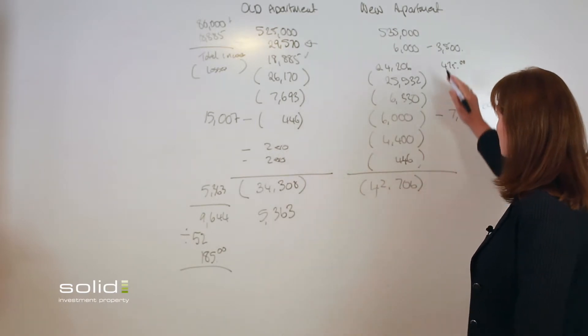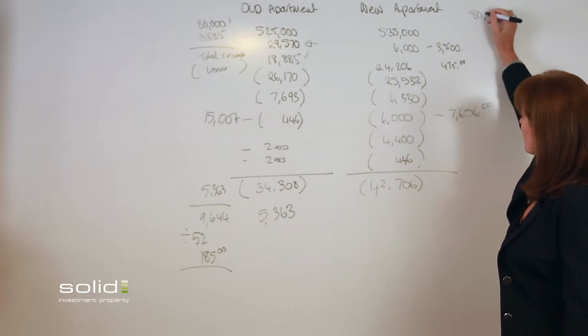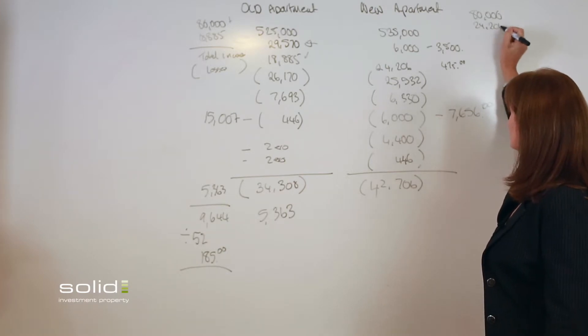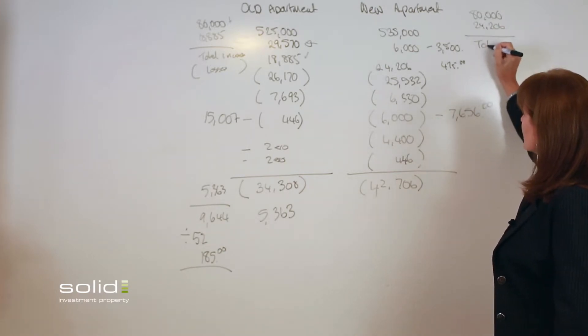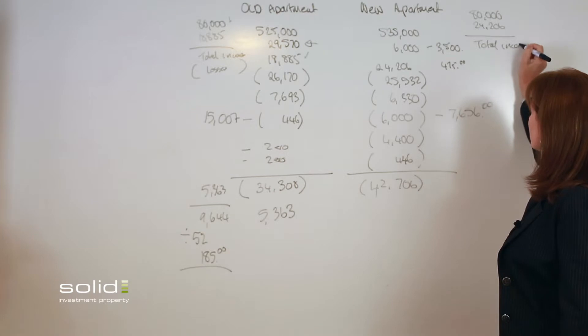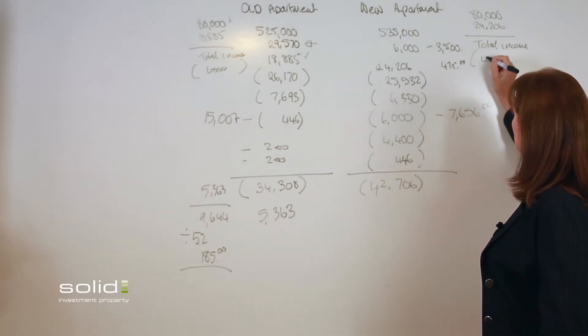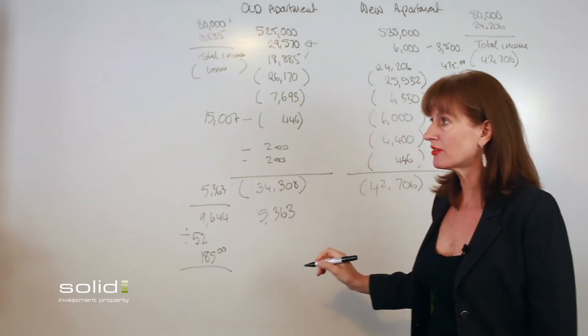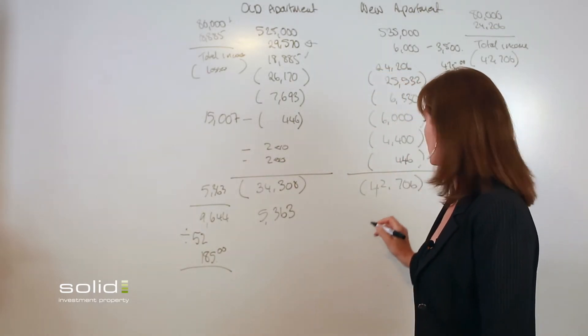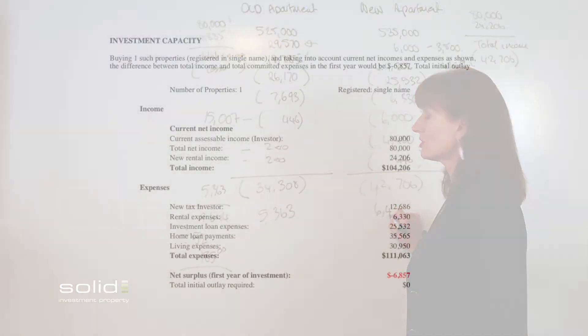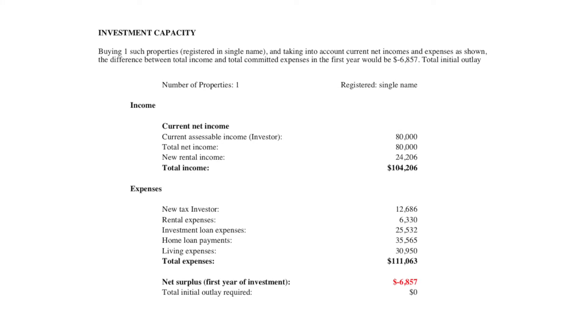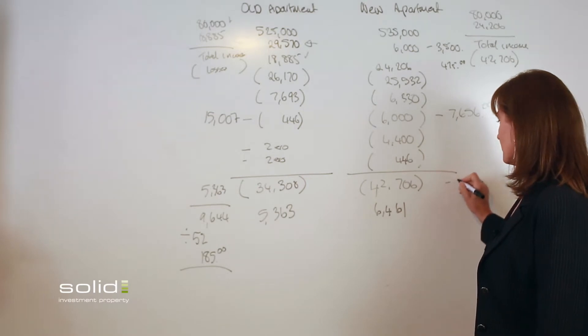So our loss base here is $42,706. So once again, if we're on an $80,000 wage, we add our rent of $24,206. So for our tax return, we look at our total income minus our total losses on our property, and that basically triggers a refund for us of $6,461.